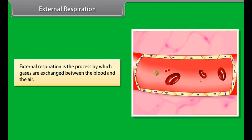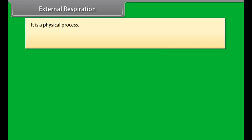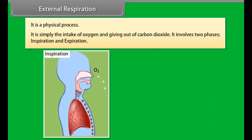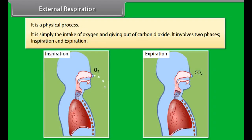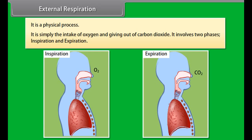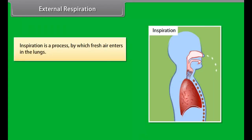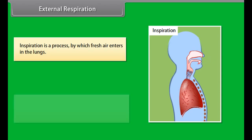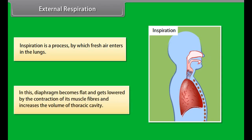Aerobic respiration: when oxygen is used for respiration, it is called aerobic respiration. Examples include most plants and animals. When there is a lack of oxygen in our muscle cells, pyruvate is converted into lactic acid, which is also a three-carbon molecule. If we perform any sudden activity, cramps are caused in our muscles due to the formation of lactic acid.